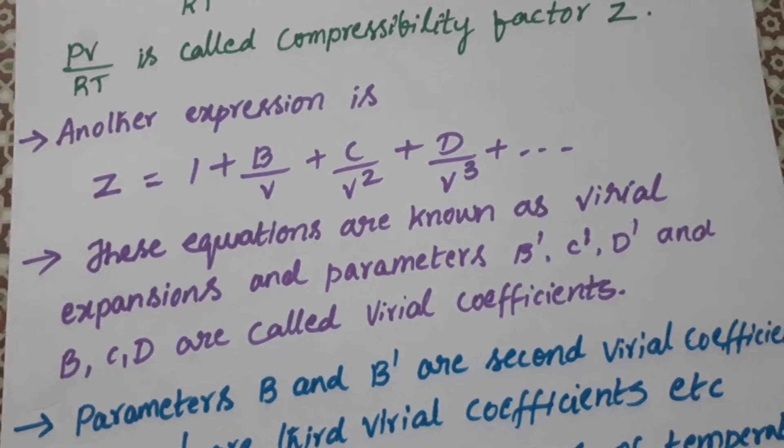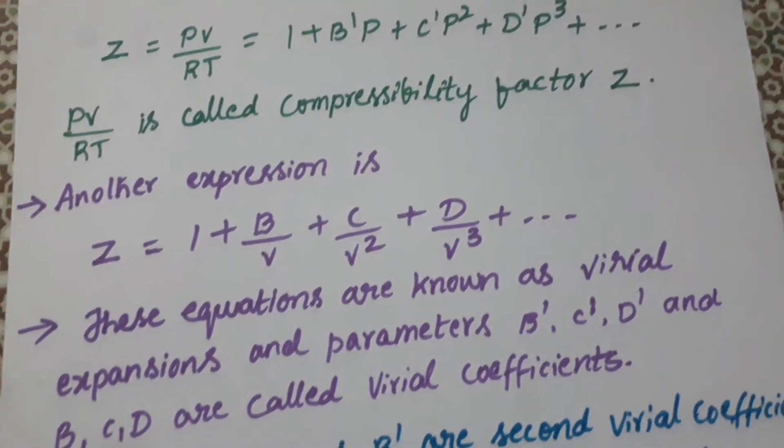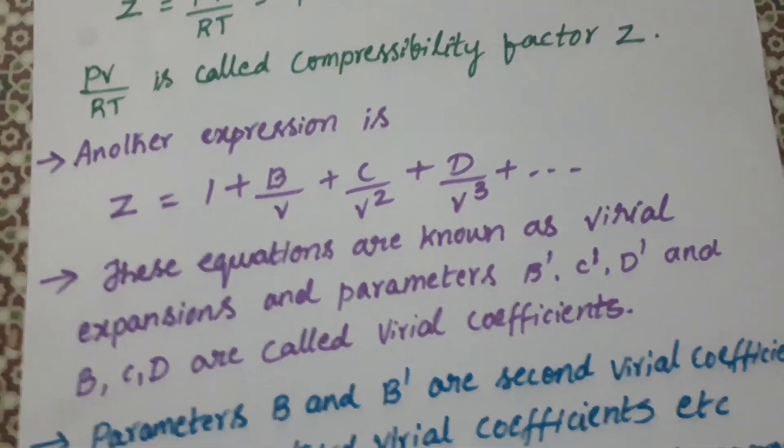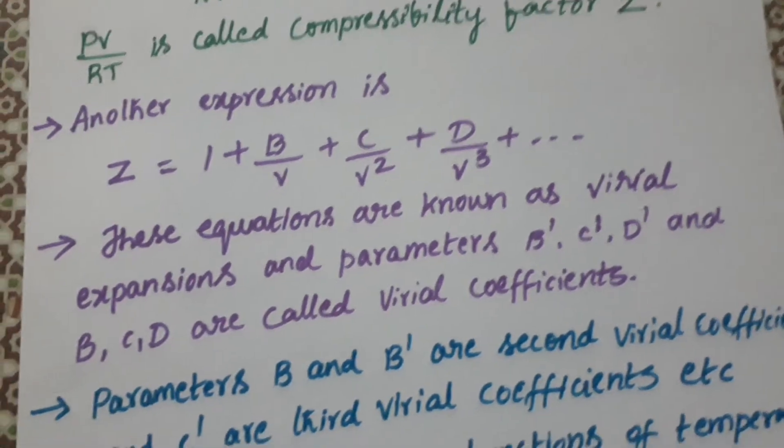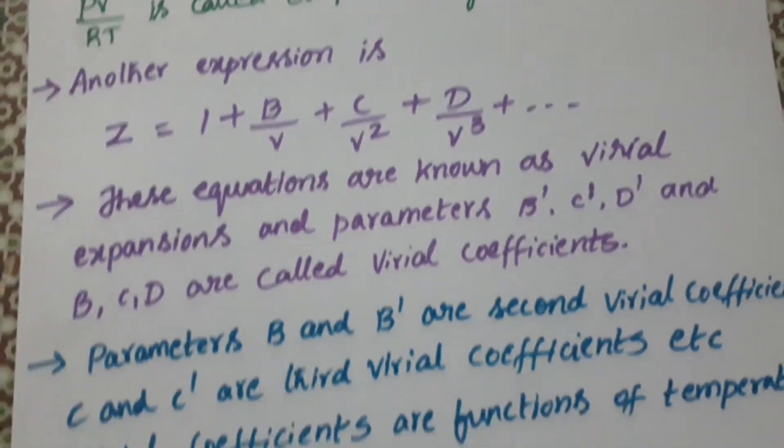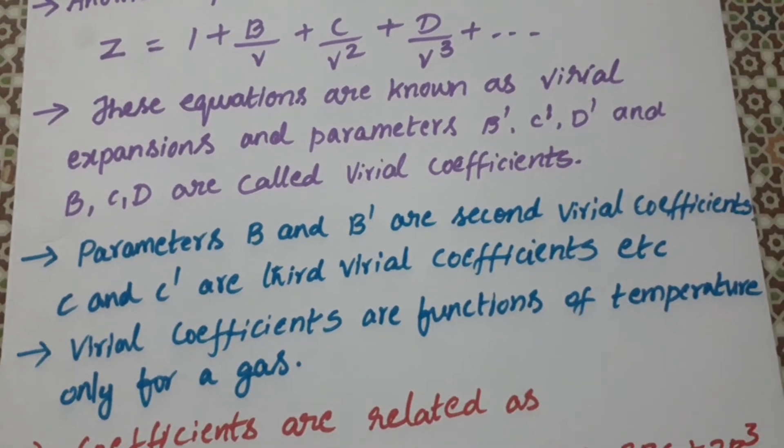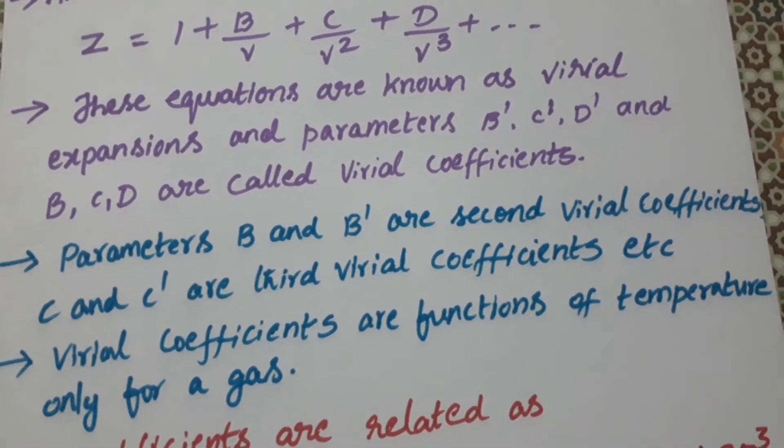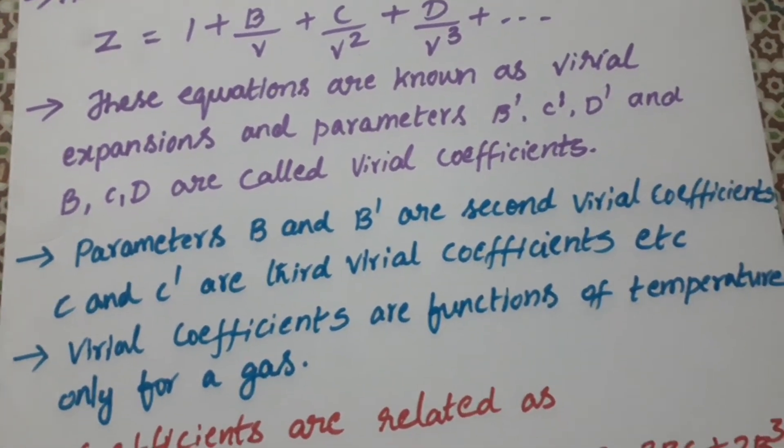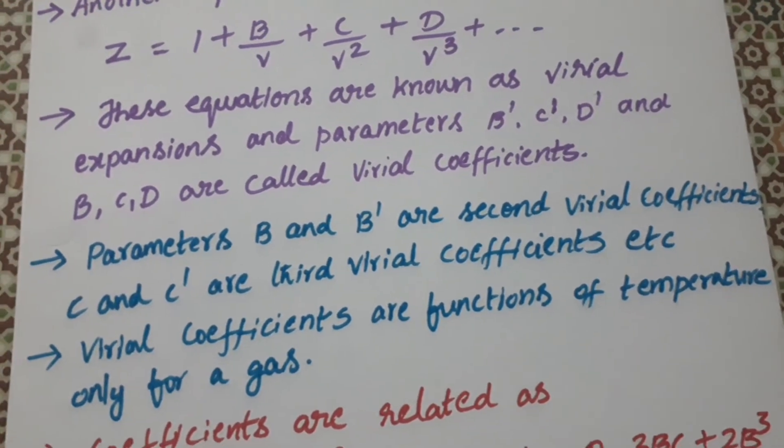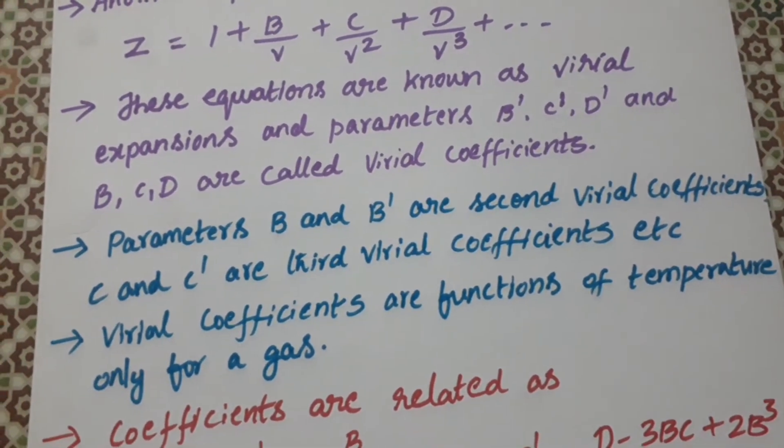And these parameters, that is B', C', D' and B, C, D, they are called virial coefficients. So these parameters B and B' are second virial coefficients. C and C' are third virial coefficients. And similarly, D and D' are fourth virial coefficients and it goes on.